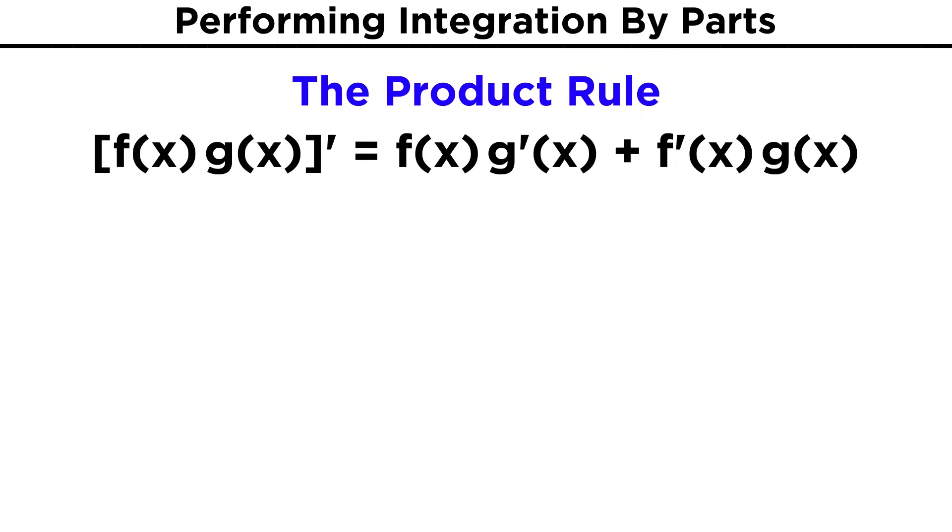Let's quickly recall the product rule. It says that the derivative of a product of two functions is equal to the first times the derivative of the second, plus the derivative of the first times the second.